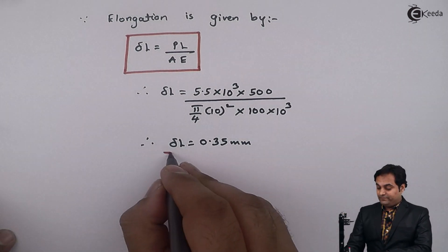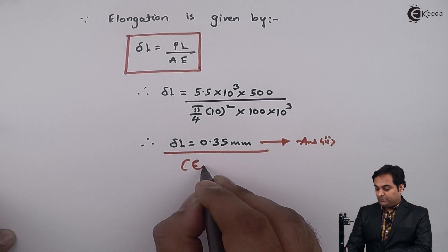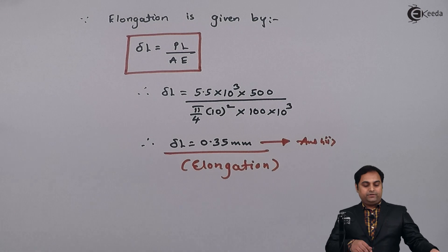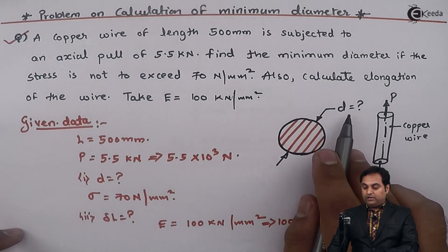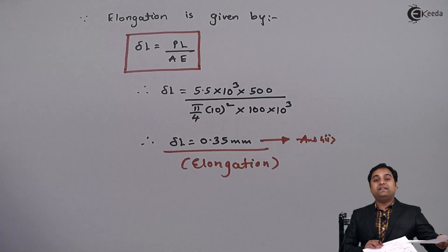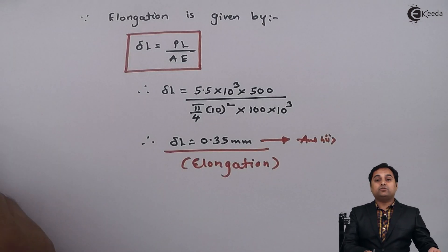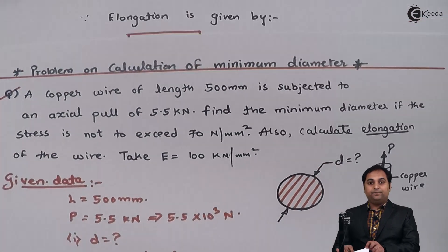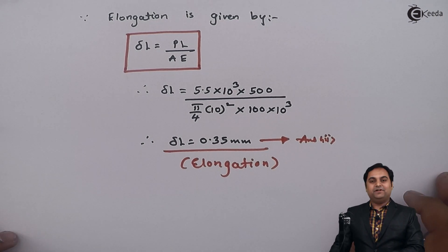Since the rod is being pulled, this deflection is elongation — it causes an increase in length and a decrease in diameter. So in this video we have seen how to calculate the unknown diameter of a copper wire subjected to a pull type of loading. The diameter was 10 mm and the elongation delta L is 0.35 mm. With this we complete the question.